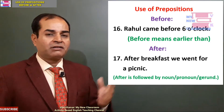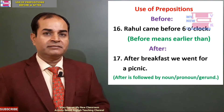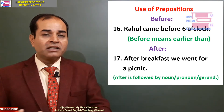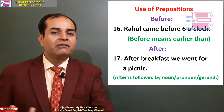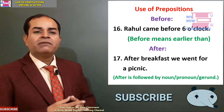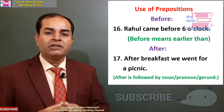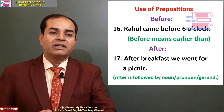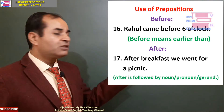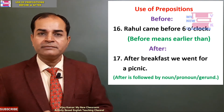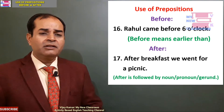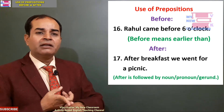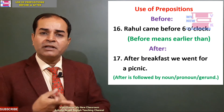For example: 'Rahul came before 6 o'clock.' Before means earlier than — say pahle — he was supposed to be there at 6, and he came before that. Now, what about after? 'After breakfast, we went for a picnic.' After here is followed by a noun, pronoun, or gerund. After is a preposition, before is a preposition. So before means earlier than, and after is followed by a noun, pronoun, or gerund — as in 'after breakfast, we went for a picnic.'